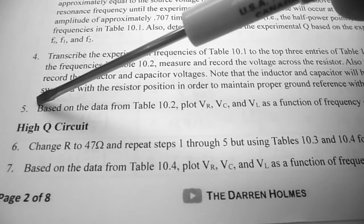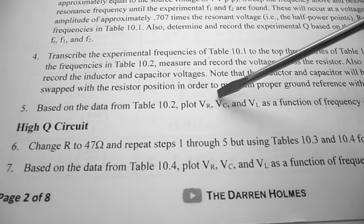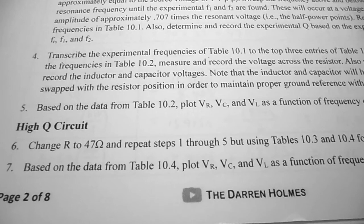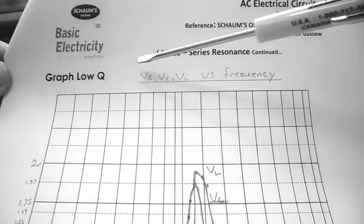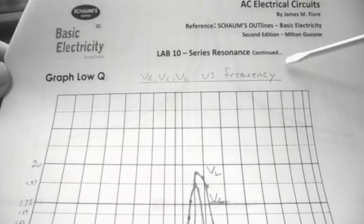Under procedure step 5, based on the data from Table 10.2, plot VR, VC, and VL as a function of frequency on plot 10.1. On plot 10.1 for the low-Q circuit, I've labeled it VR, VC, VL versus frequency.